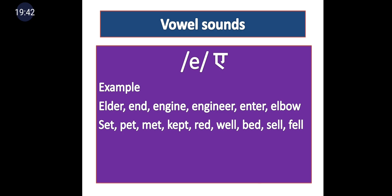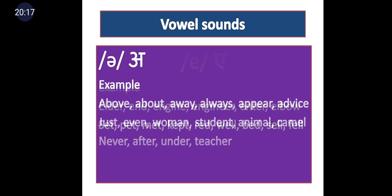Remember: 'engineer' doesn't start with 'e' sound — it starts with 'e' (ɪn-). This vowel /e/ also appears medially in: set, pet, met, kept, red, well, bed, sell, fill. Keep the symbol for this pure vowel in mind — the E-like symbol in the slant bar represents the /e/ sound.